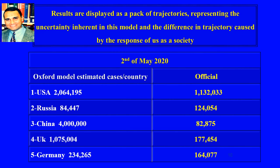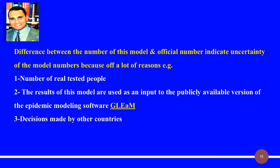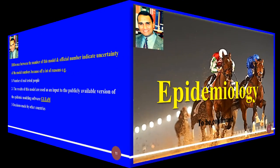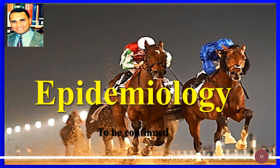This describes that the model is an estimation — hypothetical in nature — for estimating how an infectious disease will unfold. The difference between the model numbers and official numbers indicates uncertainty due to many reasons, such as the number of people actually tested. The results of this model are used as input to the publicly available epidemic modeling software GLEAM. The epidemiology series will be continued by the TVL channel, so please subscribe to see the rest.